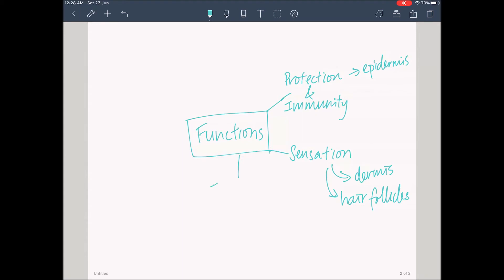The third function is excretion. This is provided by the sweat glands. Some waste products are excreted by sweat, such as urea, water, uric acid, and ammonia.